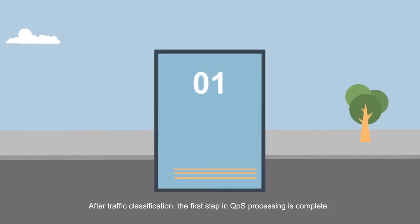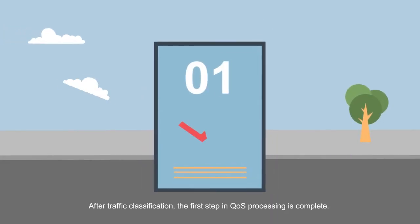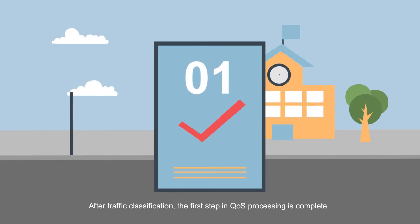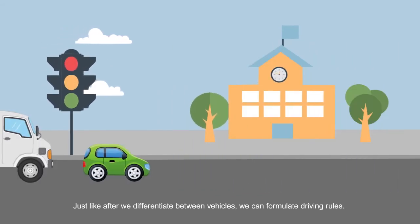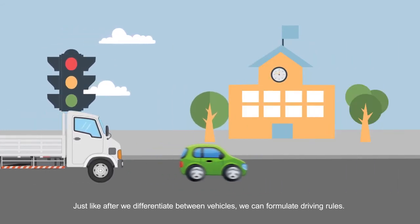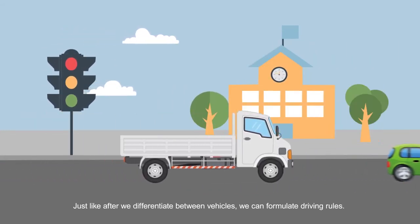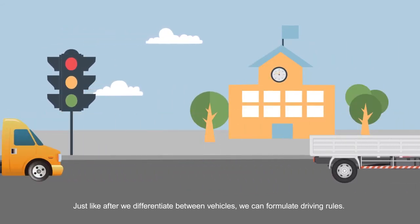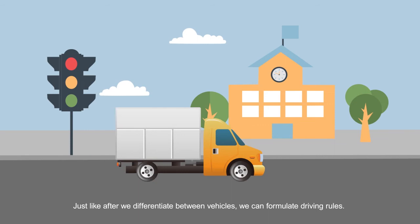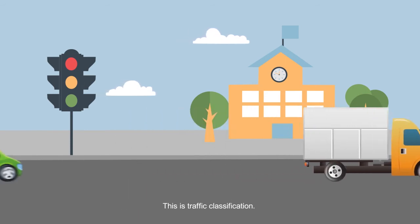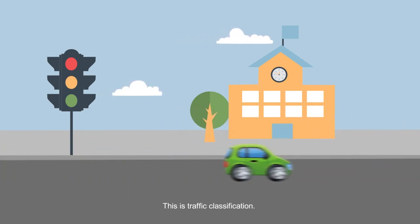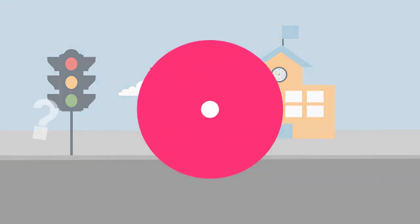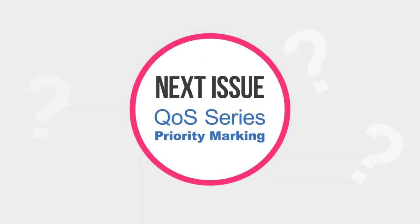After traffic classification, the first step in QoS processing is complete. Just like after we differentiate between vehicles, we can formulate driving rules. This is traffic classification. Let's see in the next issue — Q Series: Priority Marking.